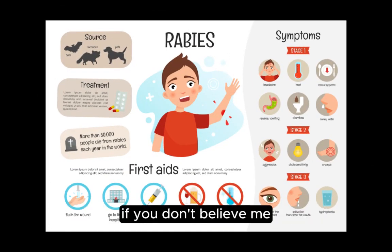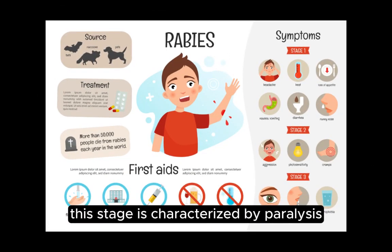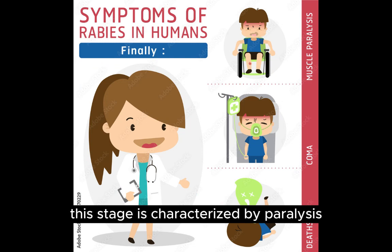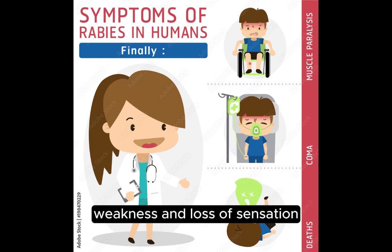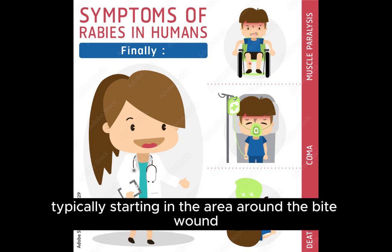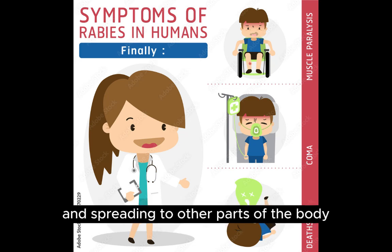The third is the paralytic stage, characterized by paralysis, weakness, and loss of sensation, typically starting in the area around the bite wound and spreading to other parts of the body.